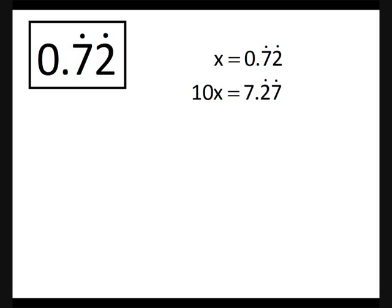Now the way this method works, we need to have the same decimal. Here we've got 7, 2, 7, 2 which aren't quite the same. So we times by 10 again, and we get 100x equals 72.727272.